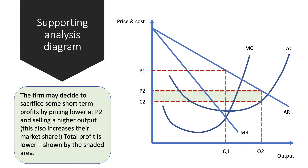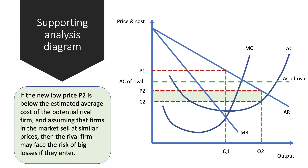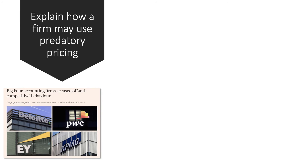Limit pricing essentially involves sacrificing short-term profit to deter entry; then you can raise your price back above P2 if those new firms don't come in. To develop the analysis to a higher level, you could draw in the average cost of a rival firm — the green dotted line — representing the unit cost of a potential entrant who hasn't yet achieved the economies of scale you've already achieved. P2 lies below that average cost, so the rival firm could face losses if they enter the market.